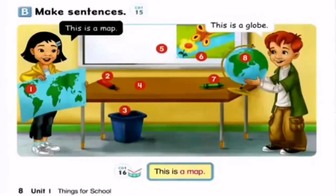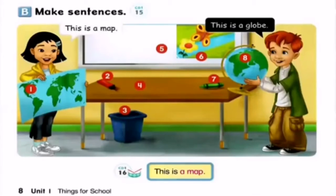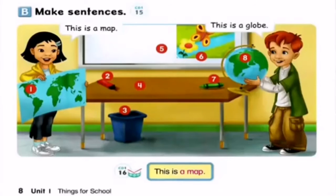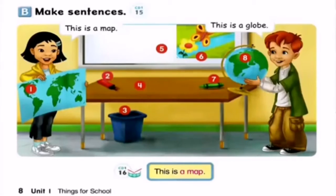This is a map. This is a globe. Number one: this is a map. Number two: this is a marker. Number three: this is a waste basket.